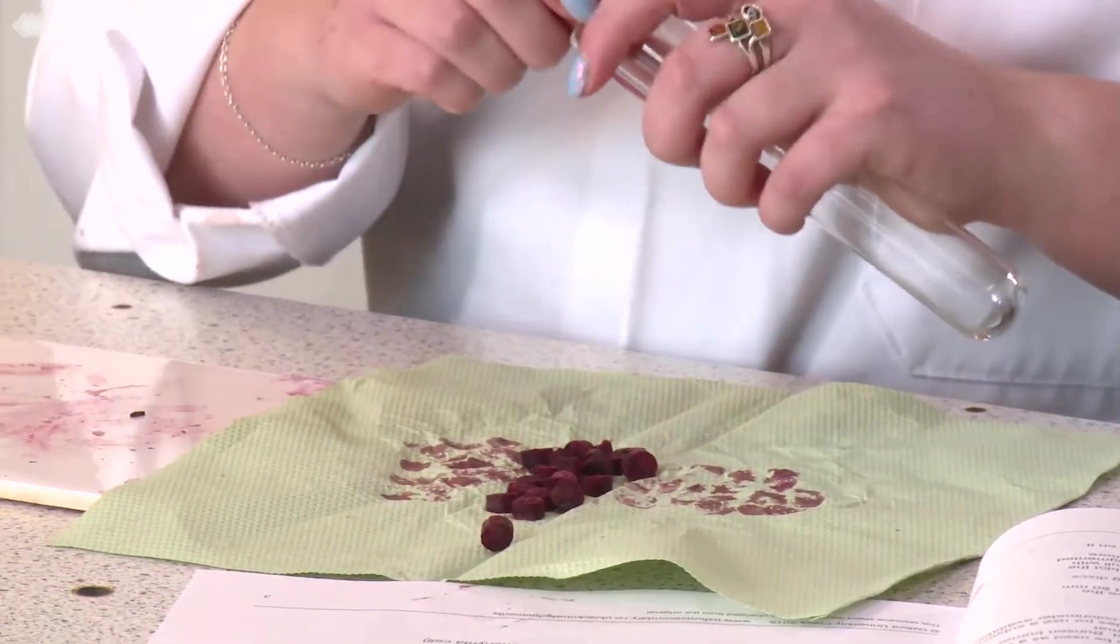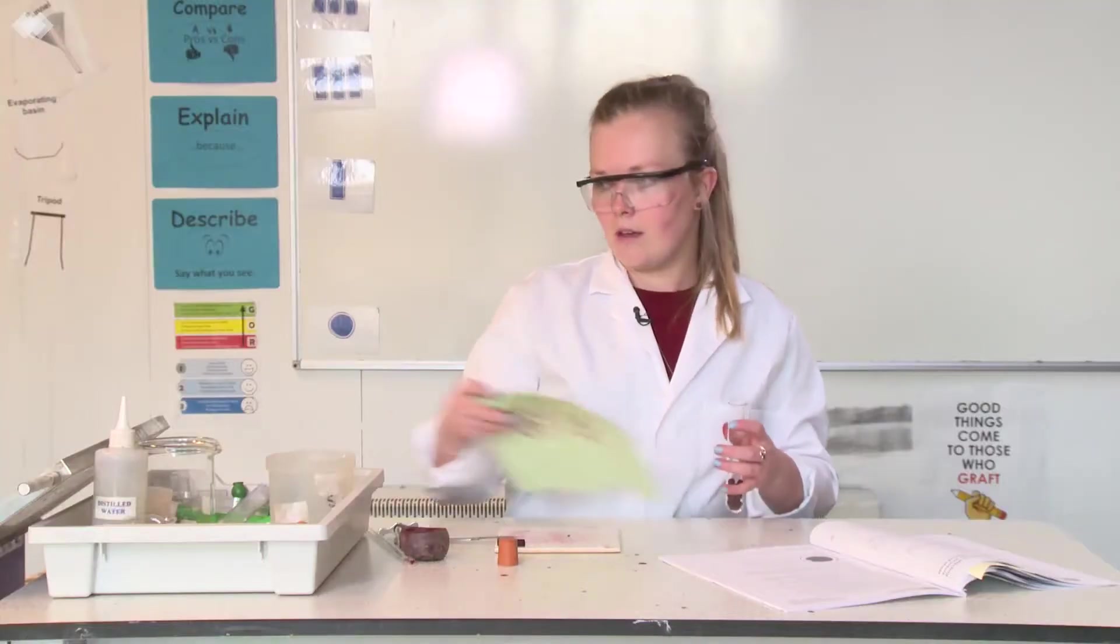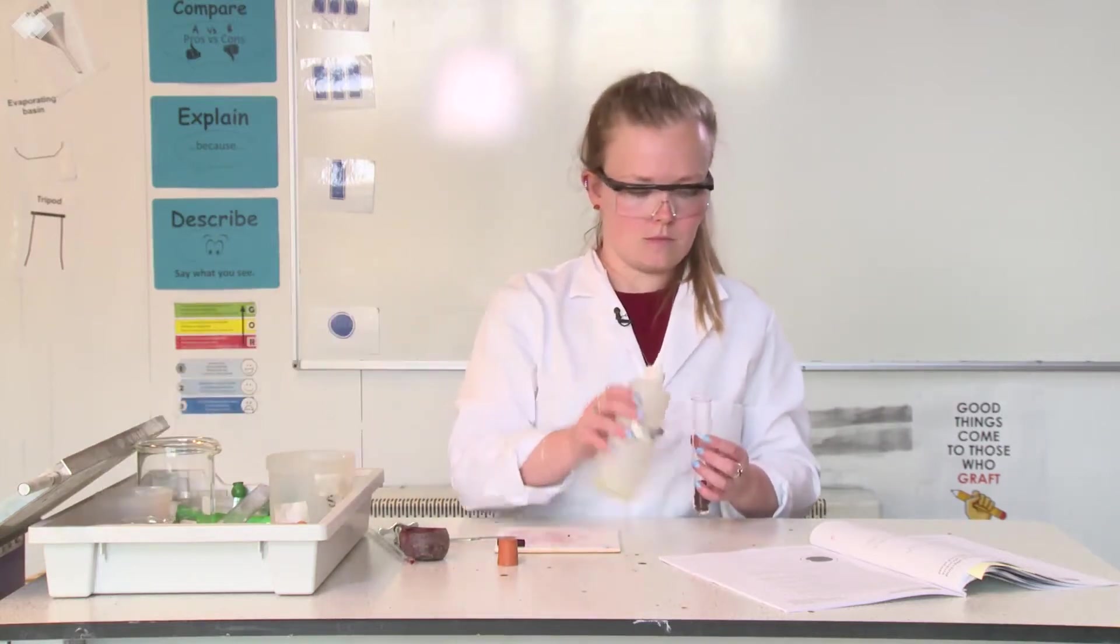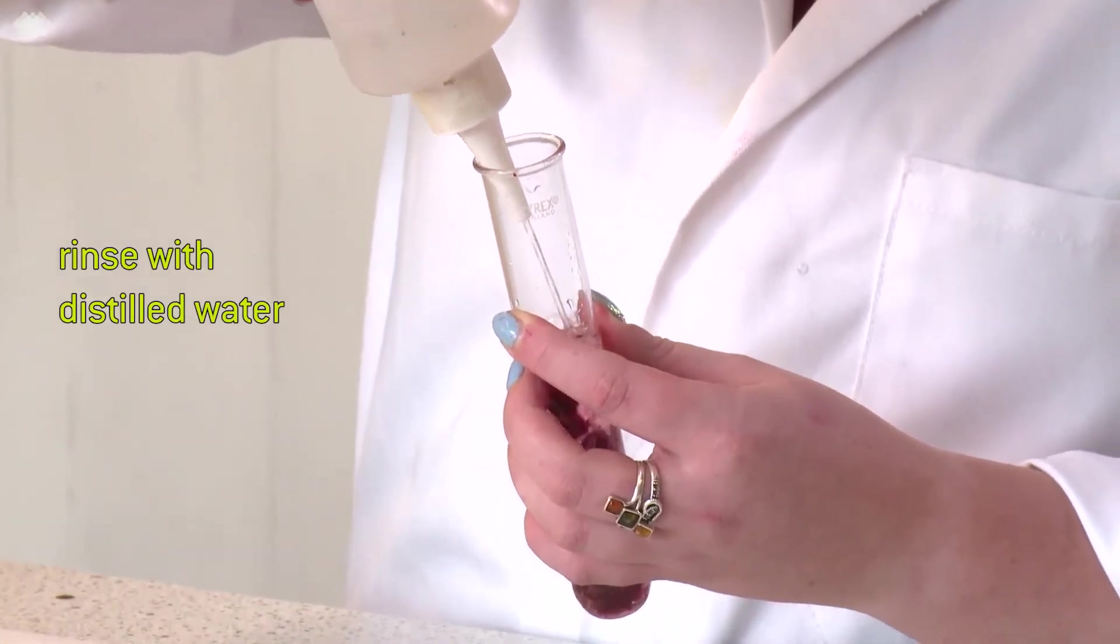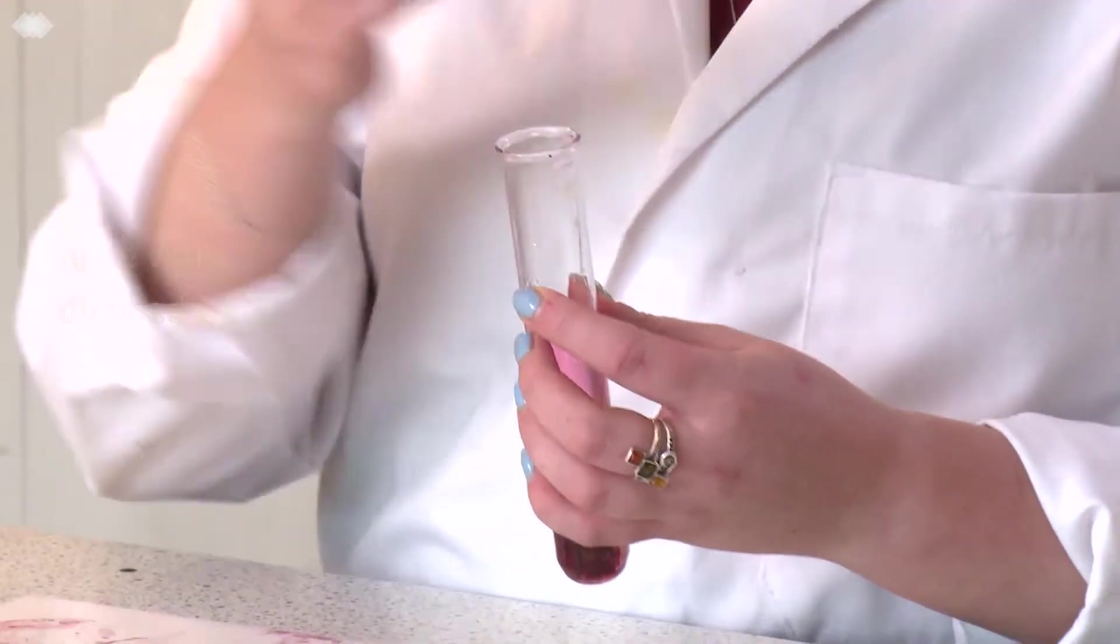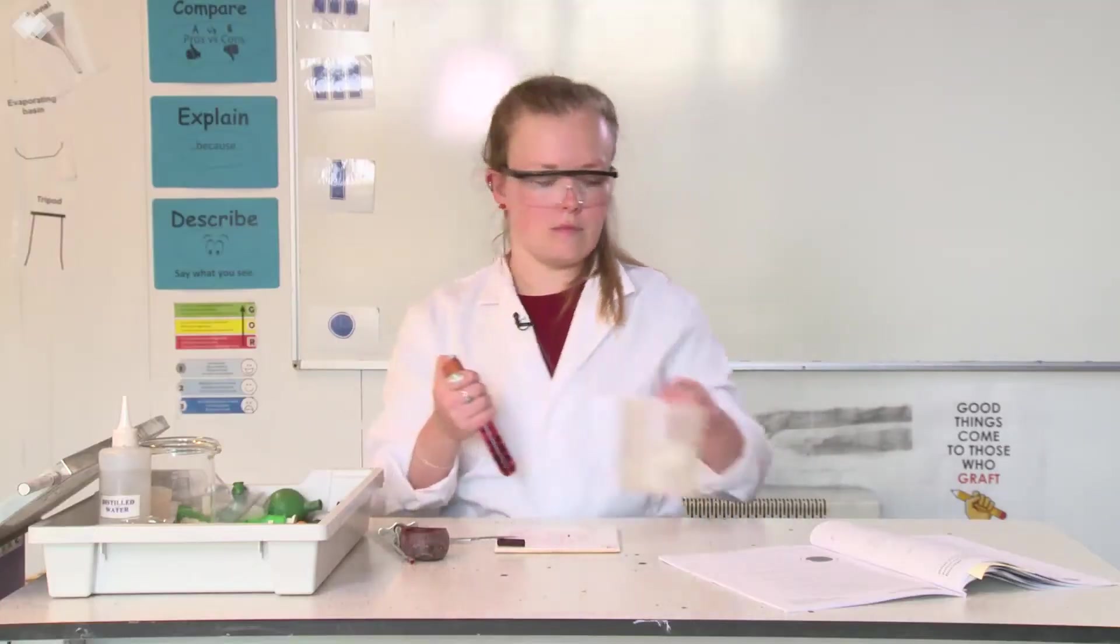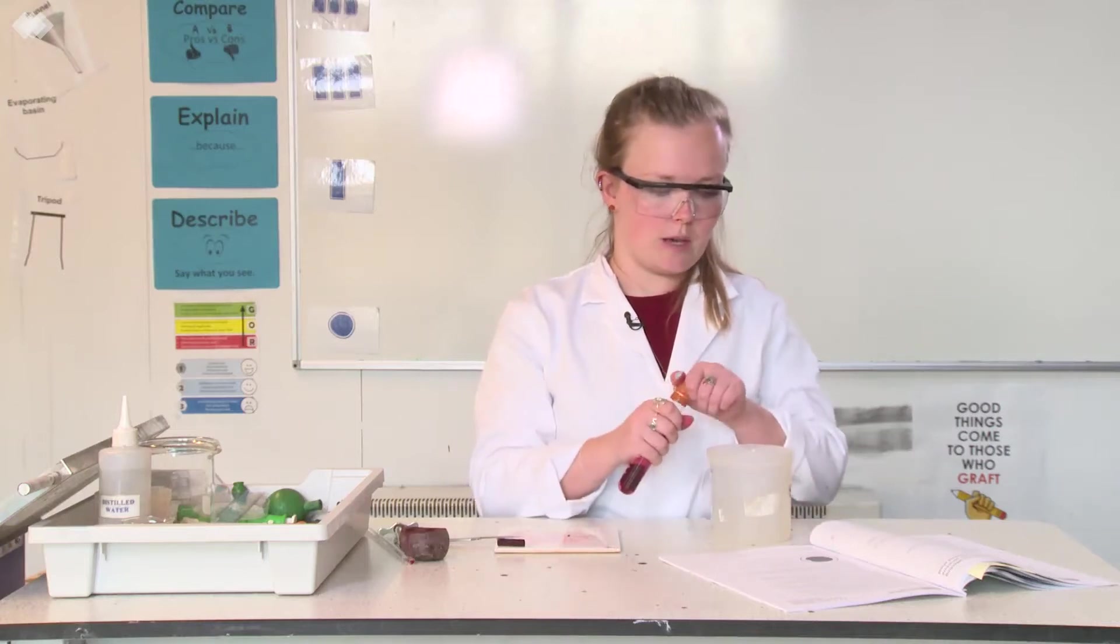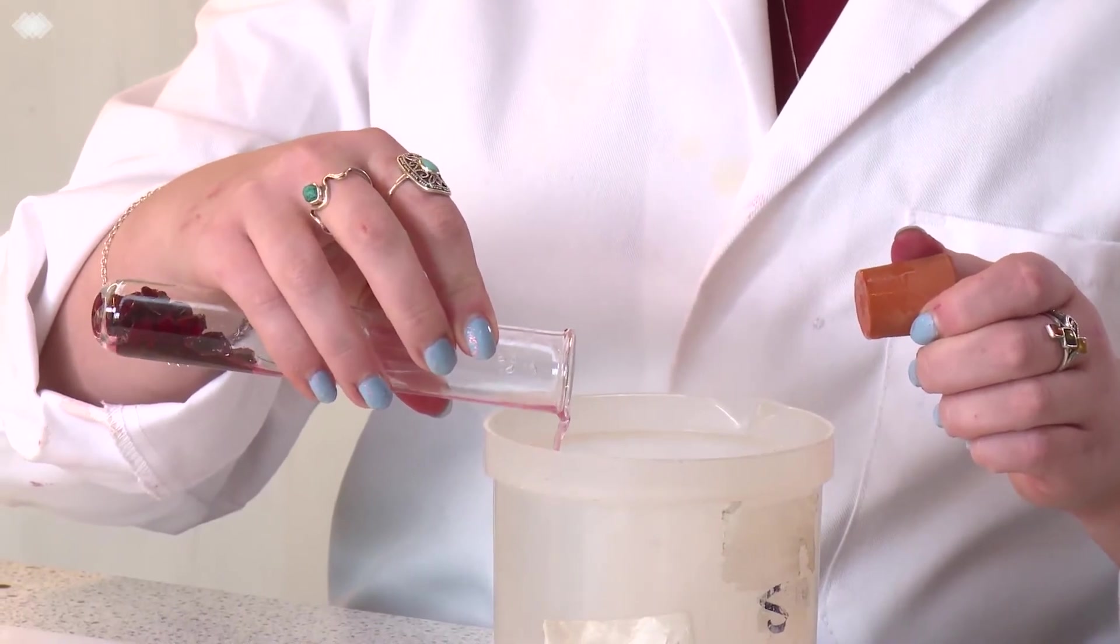Then, put your discs into a boiling tube. Half fill that boiling tube with distilled water. Put the bung on top and shake. You need to decant the waste water into a waste beaker, taking care not to lose any of your discs.